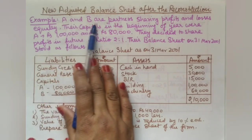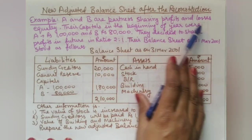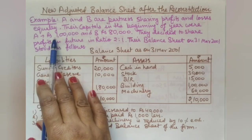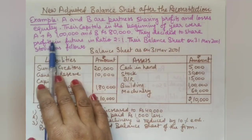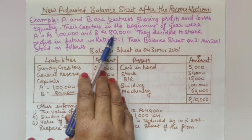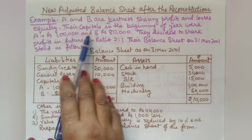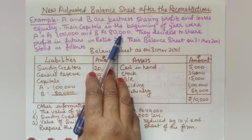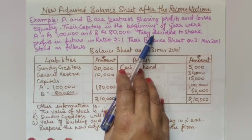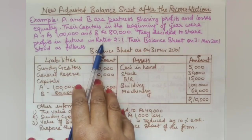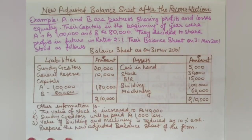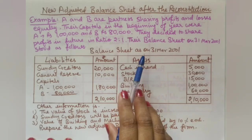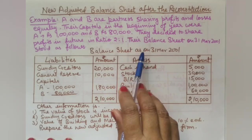A and B are partners sharing profits and losses equally. Their capitals at the beginning of the year were A: one lakh and B: eighty thousand. They then decided to share profits in the future in the ratio of 2:1. This means reconstitution of the firm occurred due to a change in profit sharing ratio.